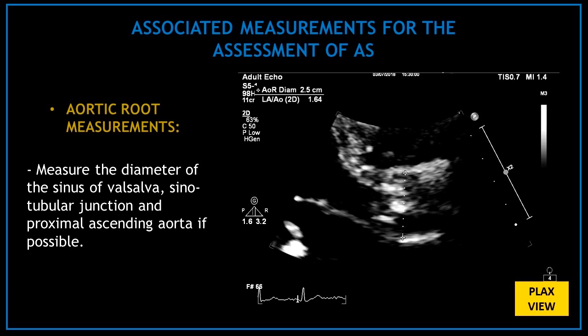Now let's talk about the associated measurements for the assessment of aortic stenosis. First, we have the aortic root measurements. From the parasternal long axis view, measure the sinus of Valsalva and the different locations in the proximal ascending aorta if possible.